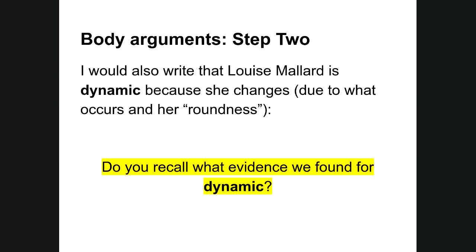Once I've settled on whether the protagonist is round or flat — she can't be both — I move to the second set of terms: is the protagonist dynamic or static? Dynamic means the character goes through a substantial, meaningful change by the end of the story; at the end, the character is different from the beginning. A static character does not experience fundamental change. I'm going to claim that Louise Mallard is dynamic because she changes — things happen to her partially as a result of her round character, and partly from plot.